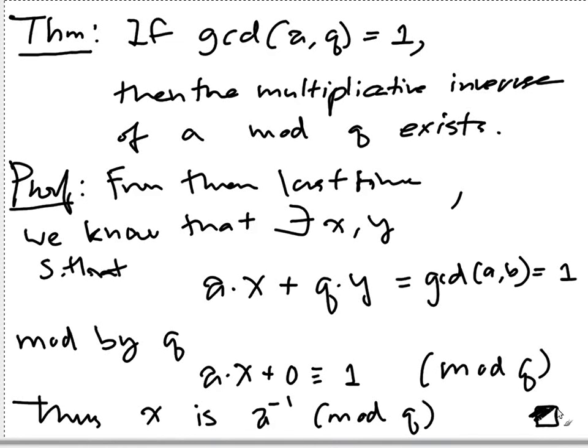But this theorem is only the existential proof. It says that the inverse exists. With this theorem we can be sure that if the modulus of the modular arithmetic we are working on is a prime number, then every number except 0 has a multiplicative inverse. But it doesn't say how to find it. If we use the previous method that we tried before, like if we enumerate all the numbers, then it would take a long time. So in the next clip we'll talk about how to find the multiplicative inverse. See you.